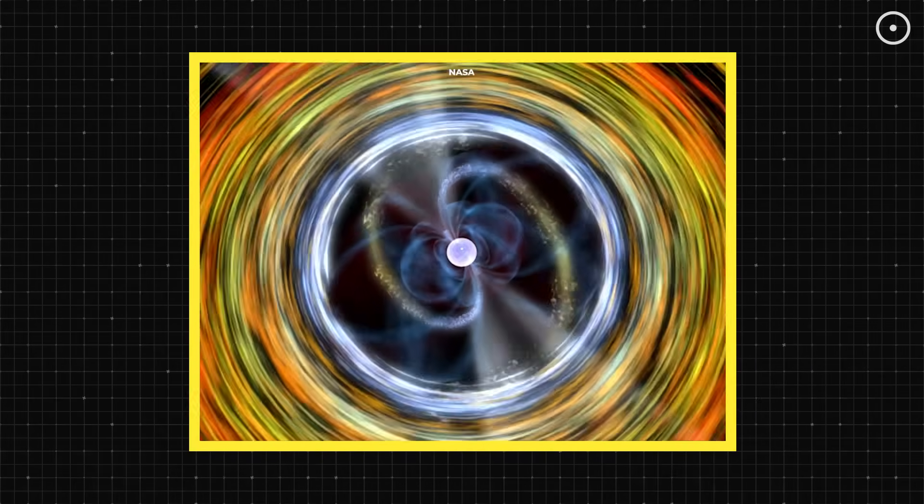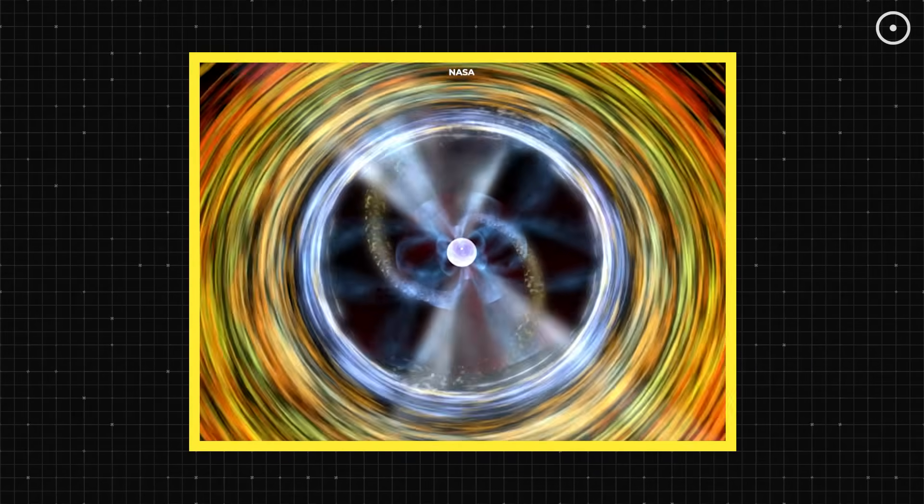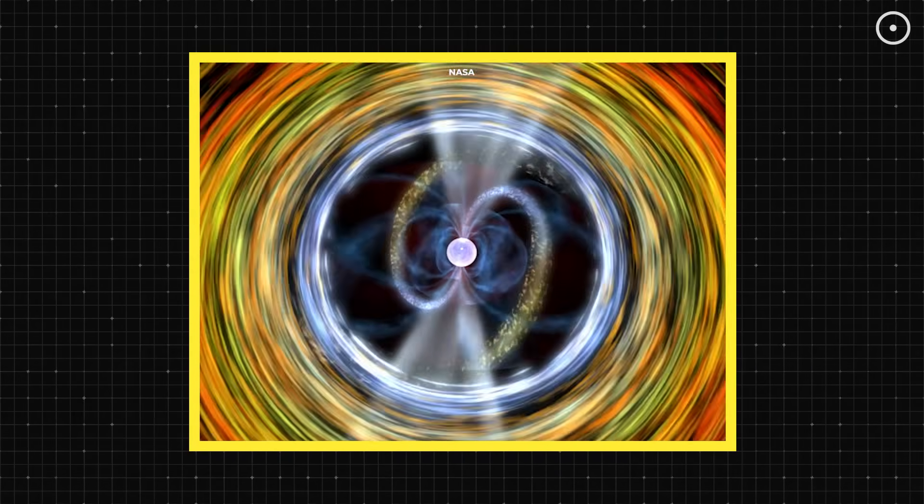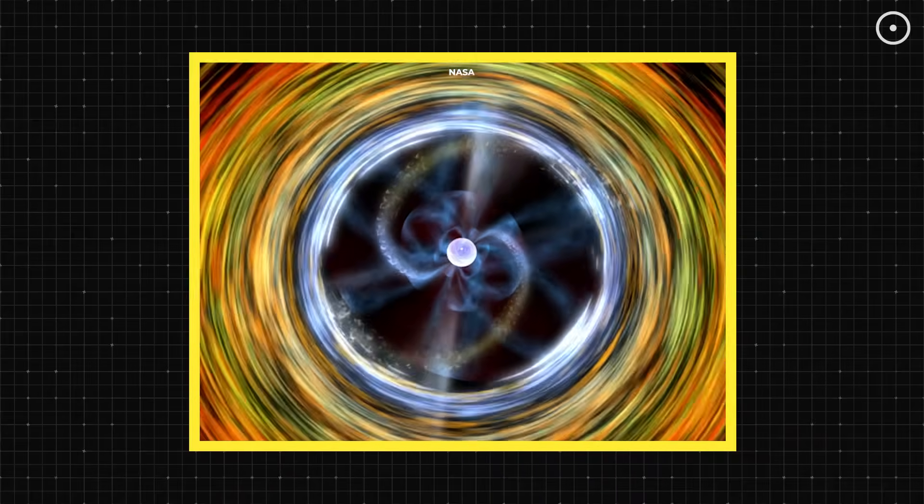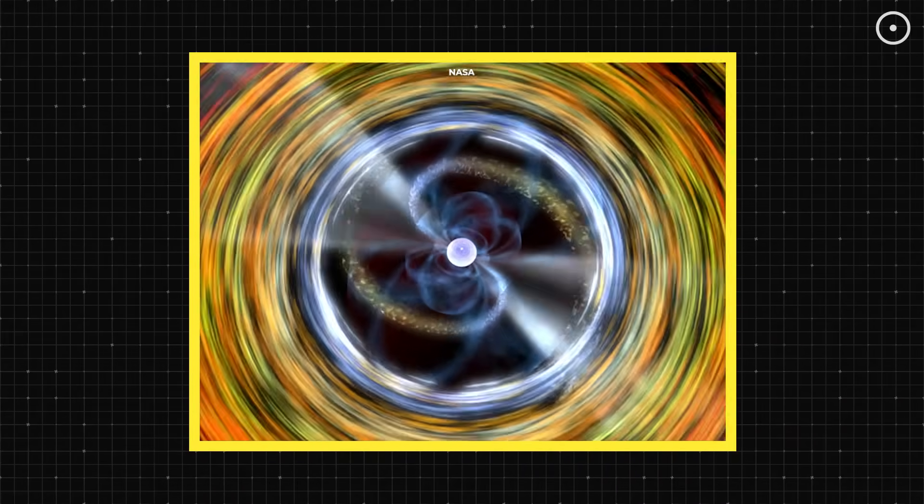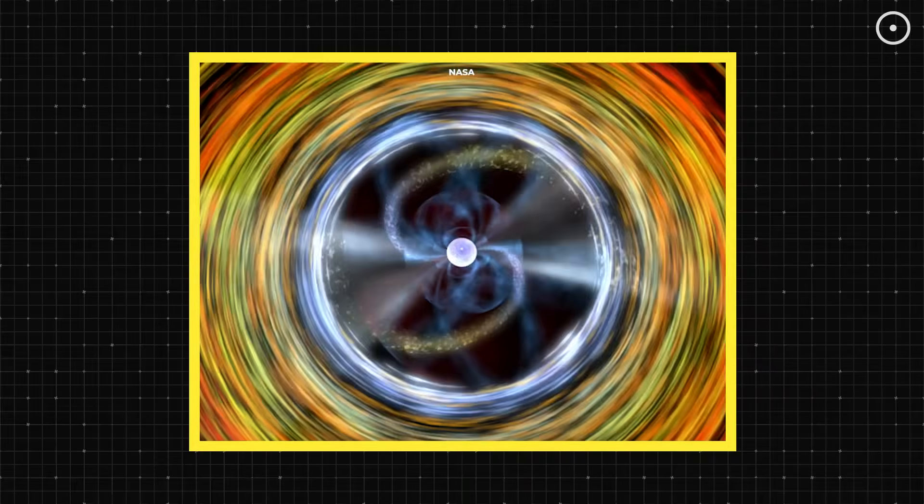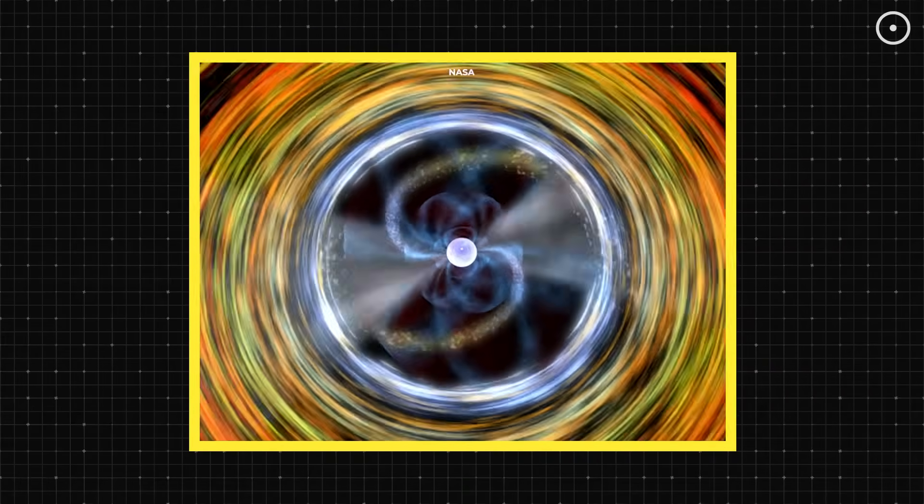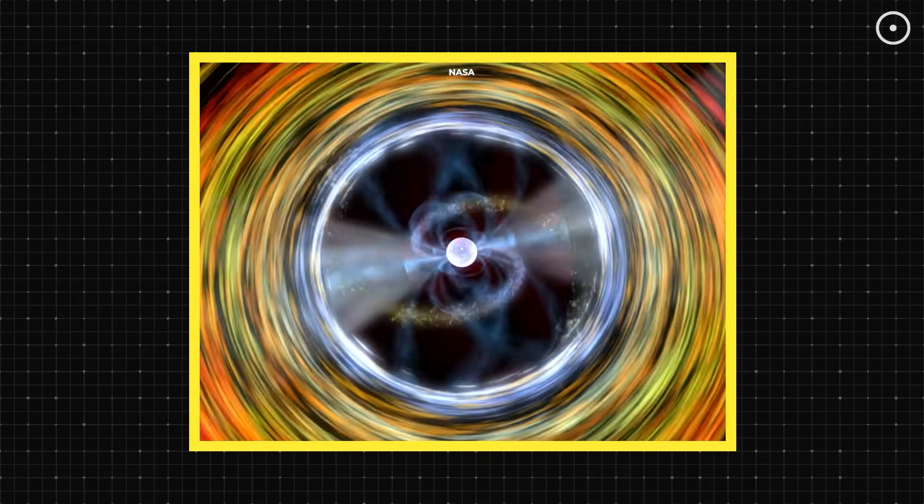But here's where magnetars become special. During this collapse, if the star is rotating rapidly and has an extremely strong magnetic field to begin with, something incredible happens. The magnetic field lines get twisted and amplified by a factor of trillions.